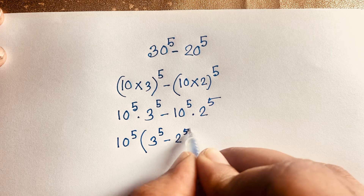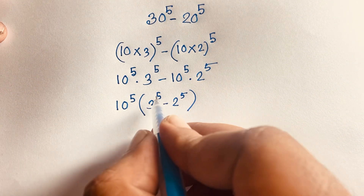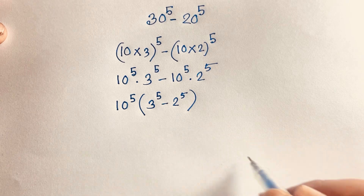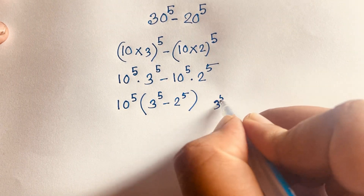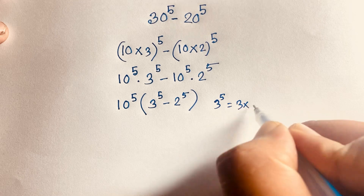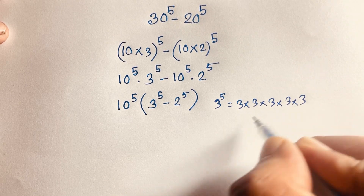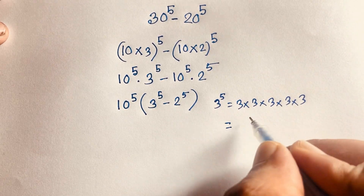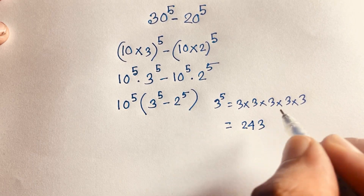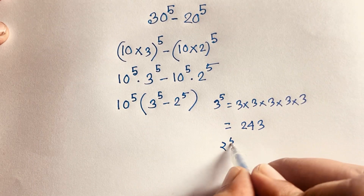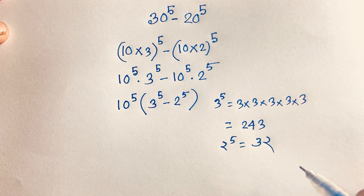So at this moment, here is 3 to the power 5. How to solve this? 3 to the power 5 equals 3 times 3 times 3 times 3 times 3, which is 243. And 2 to the power 5 — 2 times 2 times 2 times 2 times 2 — equals 32.